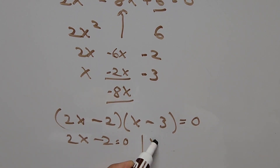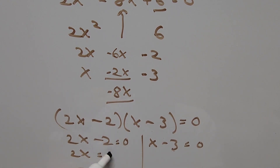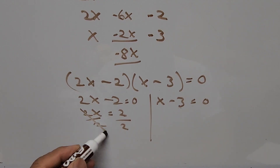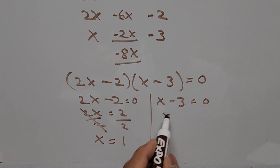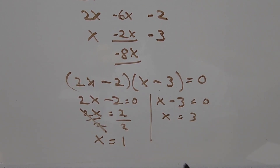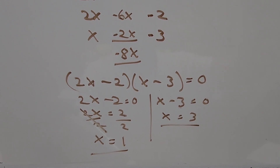Setting each factor equal to zero: from 2X minus 2 equals 0, we get 2X equals 2, so X equals 1. From X minus 3 equals 0, we get X equals 3. So we have two answers: X equals 1 and X equals 3.